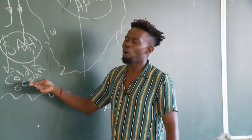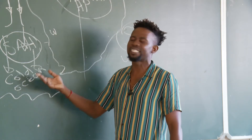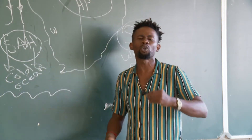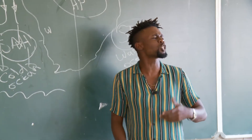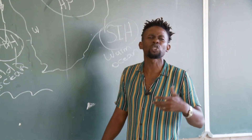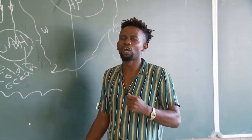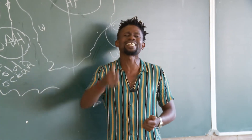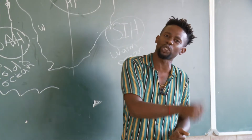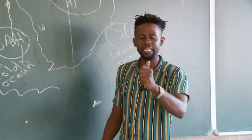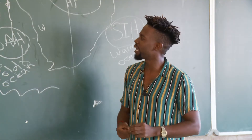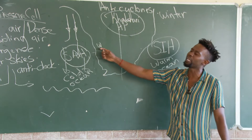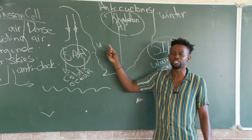The negative impacts of this anticyclone are that people living on the western side are going to experience extensive cold weather conditions. It can also lead to frost, cold weather conditions such as hail and snow. This will affect the economy, social life, and the environment in a negative manner. So the South Atlantic High is responsible for making the western part of South Africa extremely cold.